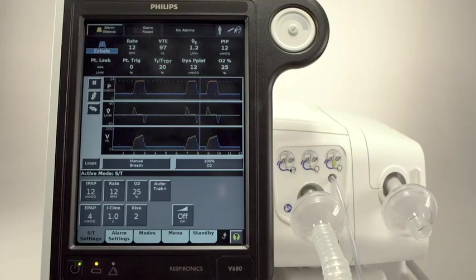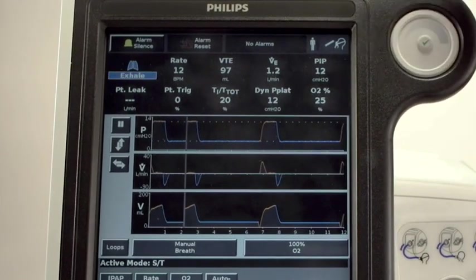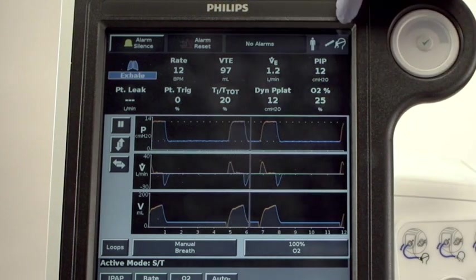Now let's go back and examine each window in detail. The ventilator status bar includes the audio silence button, alarm reset button, alarm indicator bar, and ventilator configuration icons.